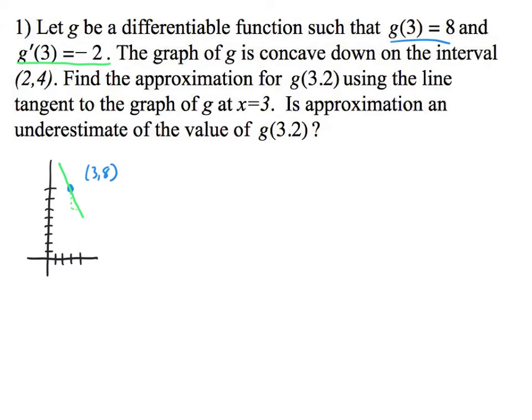Next, didn't it say that g is concave down from 2 to 4? So in this interval right here from 2 to 4, we have 2, 3, 4. So we're at 3, but in that interval, it says it's concave down. So what that means is your graph, if it's concave down, looks like that.